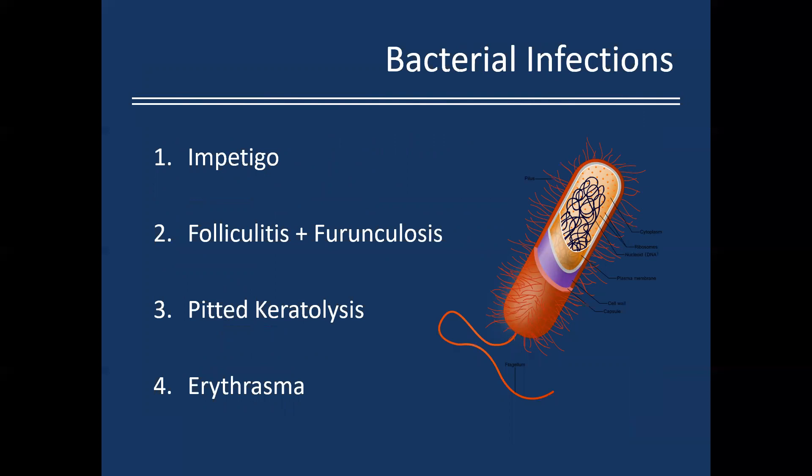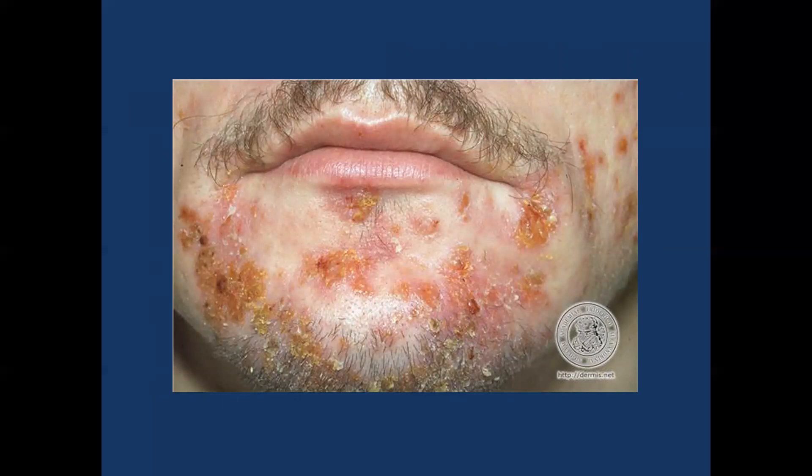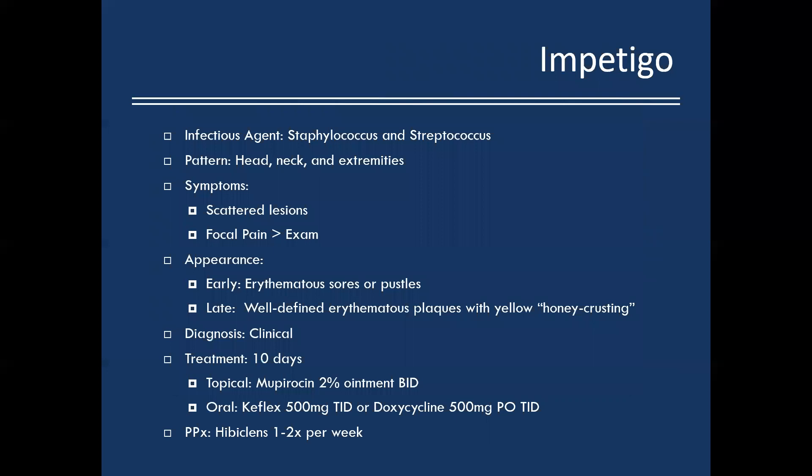Switching to bacterial infections — four main ones: impetigo, folliculitis and furunculosis, pitted keratolysis, and erythrasma. This image shows yellow crusting over erythematous macules that coalesce — classic impetigo with that honey crusting and skip lesions. The infectious agent is typically staph or strep, distributed on the head, neck, and extremities.